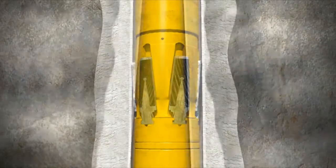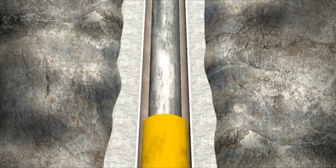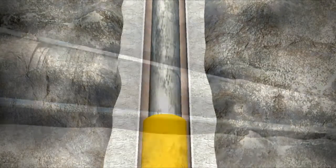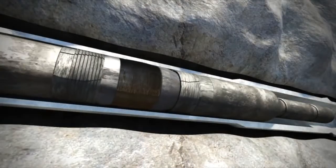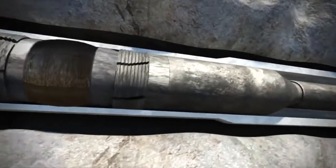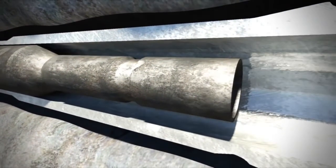Once hung off into the parent casing, the isolation packer running tool is disconnected from the liner and the cement retainer is set. Once we activate the cement retainer, the cementing process can begin.